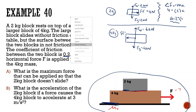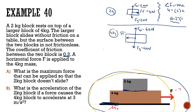Now let's look at the whole system. Sum of all forces in x equals mass times acceleration. We have a force of friction from the top block going to the right, and a force of friction going to the left — both are 4 newtons so they cancel out — and then there's the applied force going to the right. The total mass is 4 plus 2 kilograms, and we want the maximum acceleration to be 2 meters per second squared. So the maximum force applied is 6 times 2, which is 12 newtons.